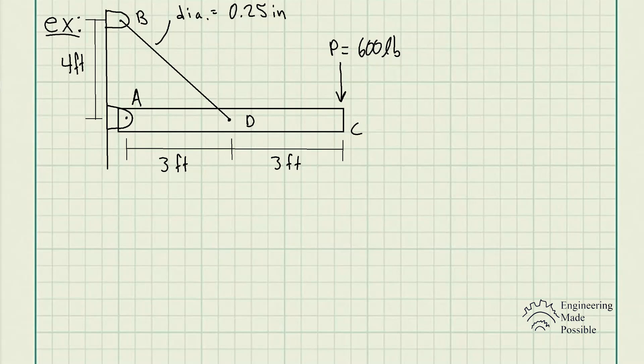For this example, we have the problem statement: the rigid pipe is supported by a pin at A and an A36 steel cable BD. If the wire has a diameter of 0.25 inches, determine how much it stretches when a load of P equals 600 pounds acts on the pipe.